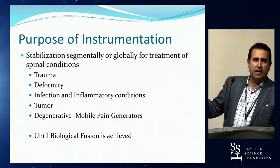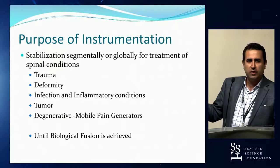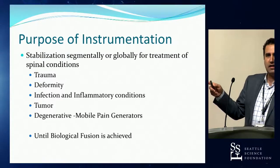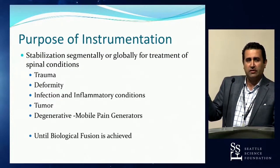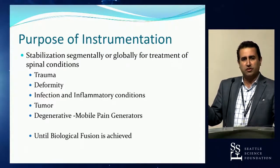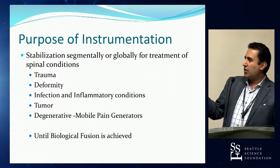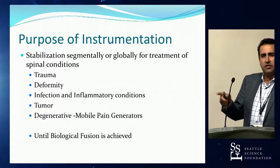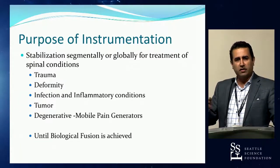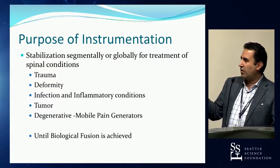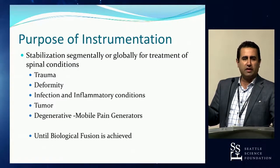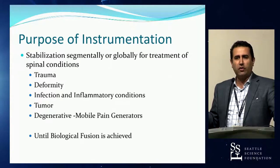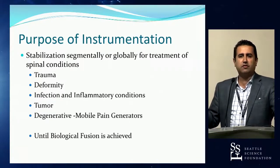Instrumentation is only good until the biological cascade of fusion is achieved. It's a race between instrumentation failure and achieving the biological cascade of fusion. Where instrumentation fails us is if it's loaded to failure, cycled to failure — brittleness, ductility, and all the factors that make up the intrinsic strength of the rod-and-screw system fail before fusion is achieved. Or patient-specific factors delay fusion. If there's one take-home message, it's really this.